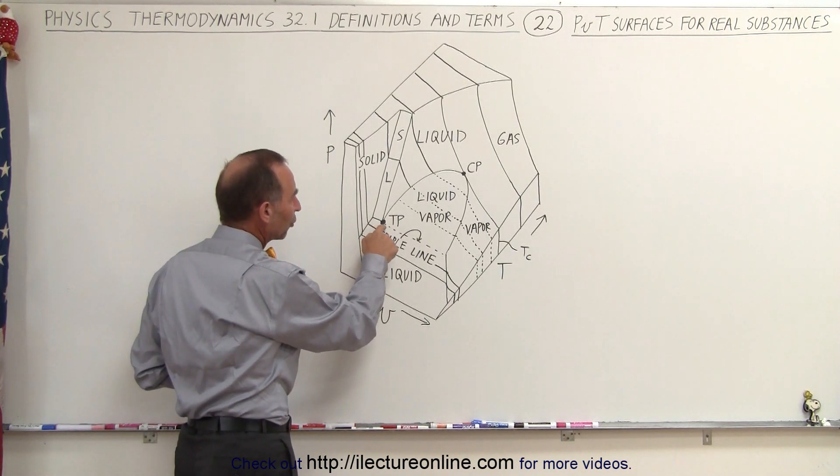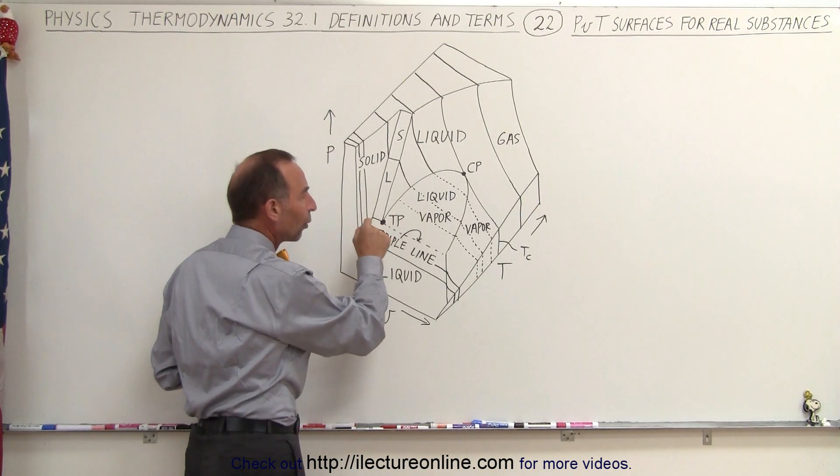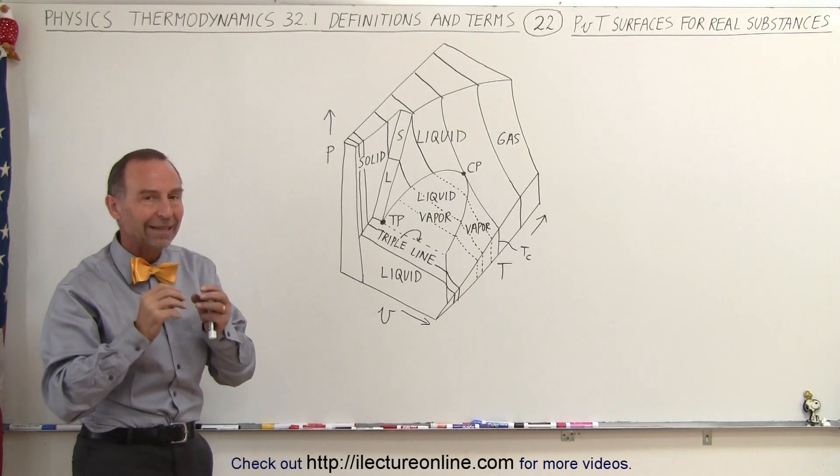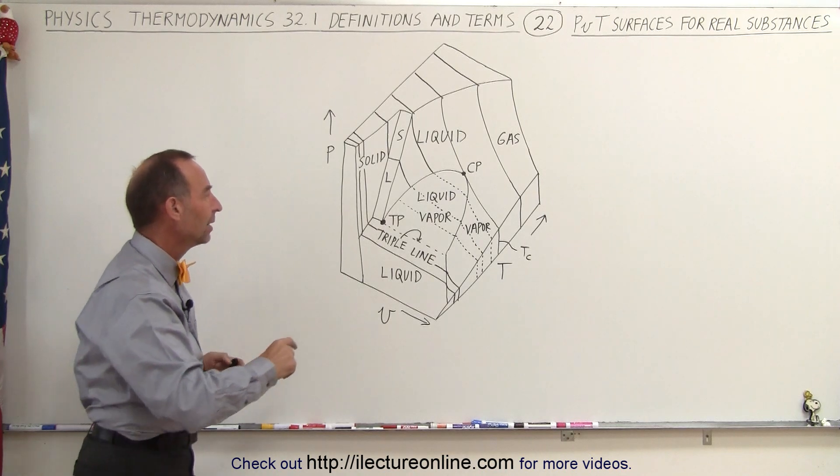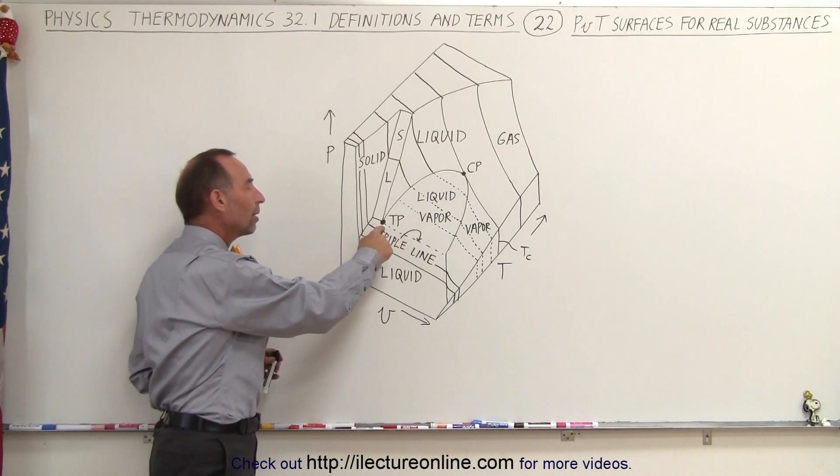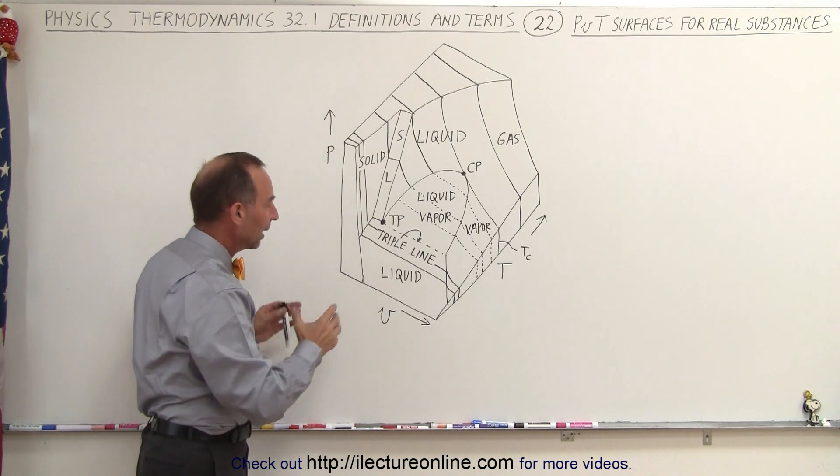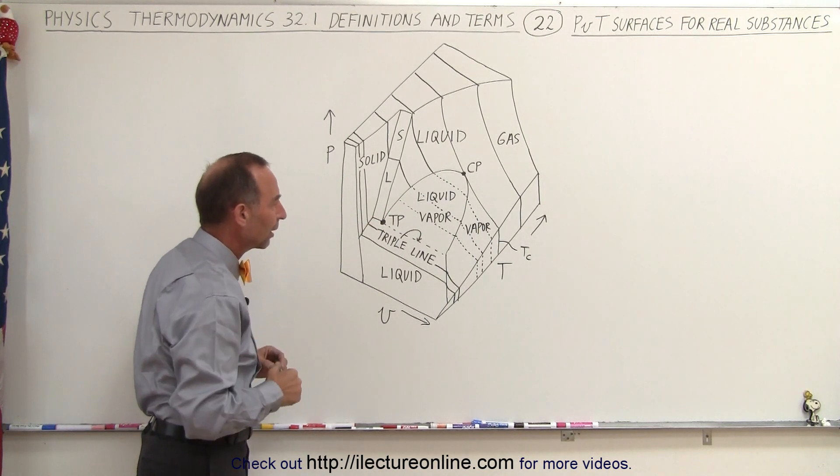Secondly, we have what we call the triple point right here. That's the only point on the graph where you can have all three substances—solid, liquid, and vapor—existing at the very same time. That usually happens at fairly low temperatures and fairly low pressures, and the correct volume to allow that to happen.